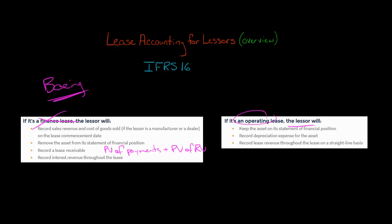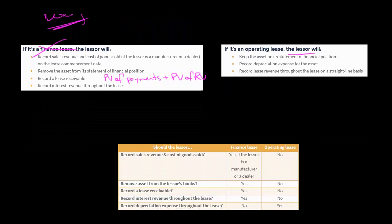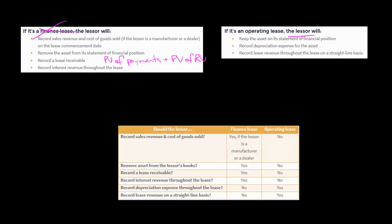If it's not a finance lease but an operating lease, the asset is not going to be de-recognized. It's going to stay on their statement of financial position, and they're going to record depreciation expense for it. Instead of interest, there's not going to be any selling profit and no interest revenue. Instead, the lessor is going to record lease revenue throughout the lease, generally on a straight-line basis, meaning the same amount of lease revenue each period. So very different accounting based on whether it's classified as a finance lease or an operating lease.